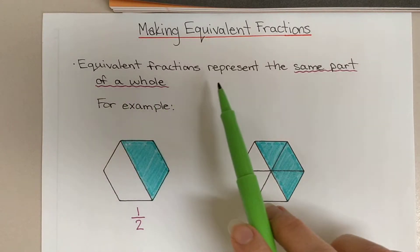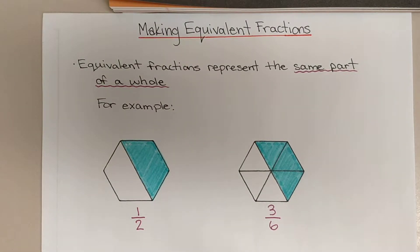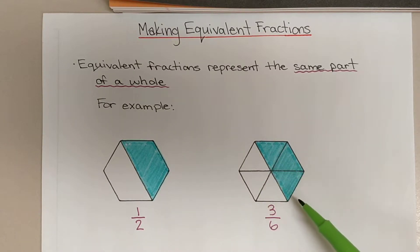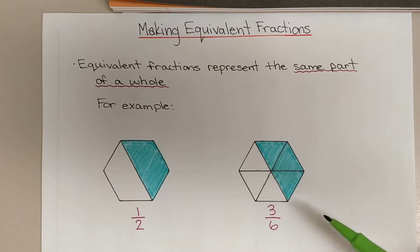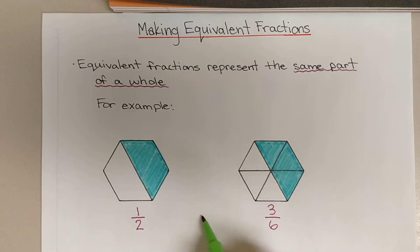Equivalent fractions represent the same part of a whole. In our example here, we've got two hexagons shown, and we've got the same part of the whole shaded. In the first one, we have one half shaded, and our second hexagon is broken up into six pieces instead of into halves, and we've got three of those pieces shaded. These fractions can be said to be equivalent because the same part of the whole is shaded.